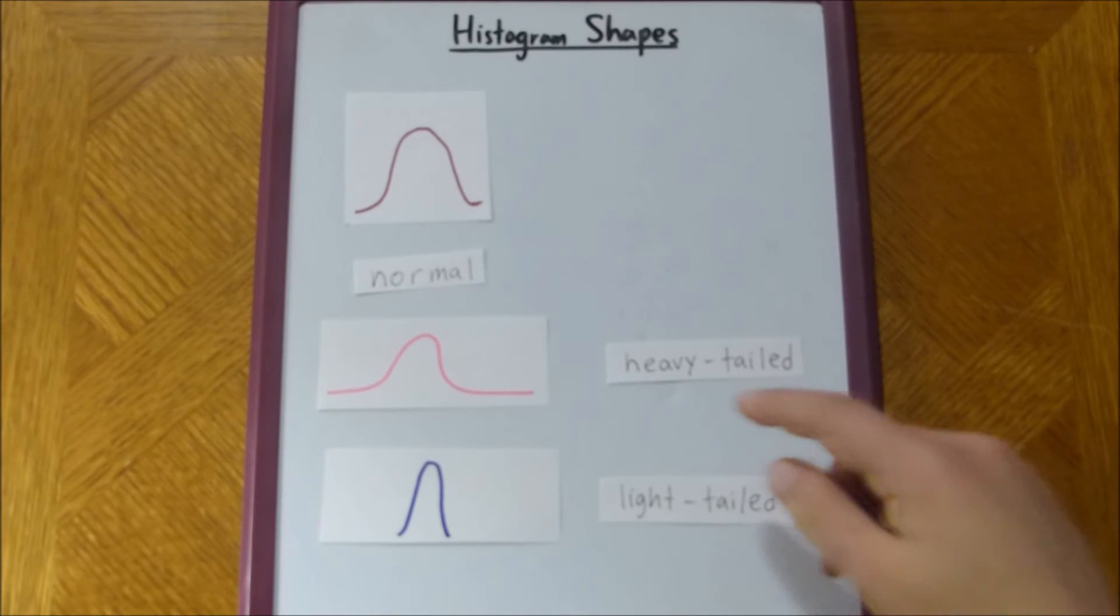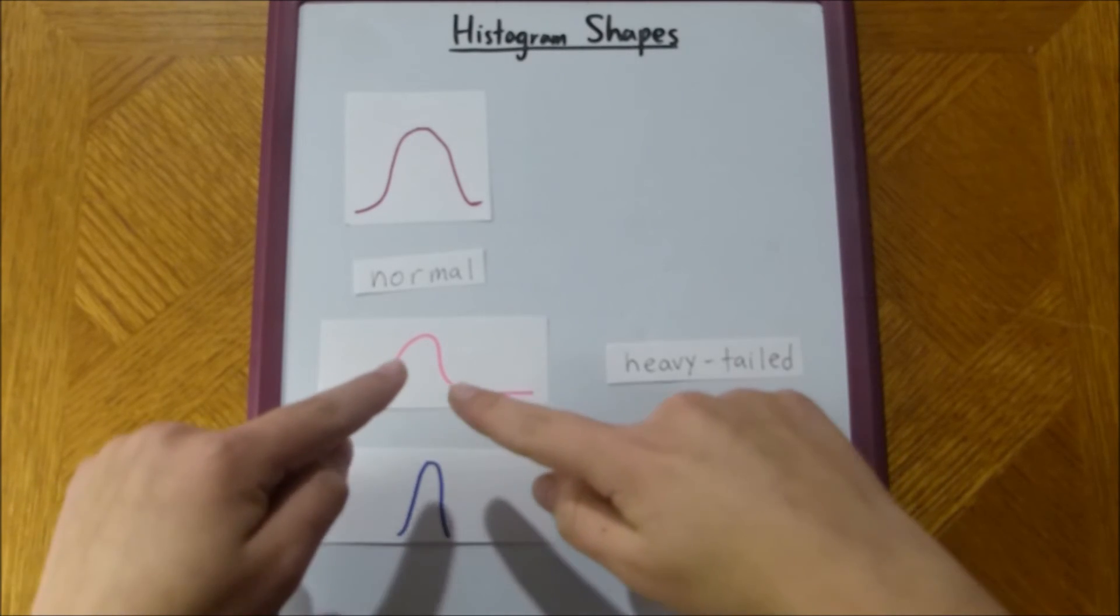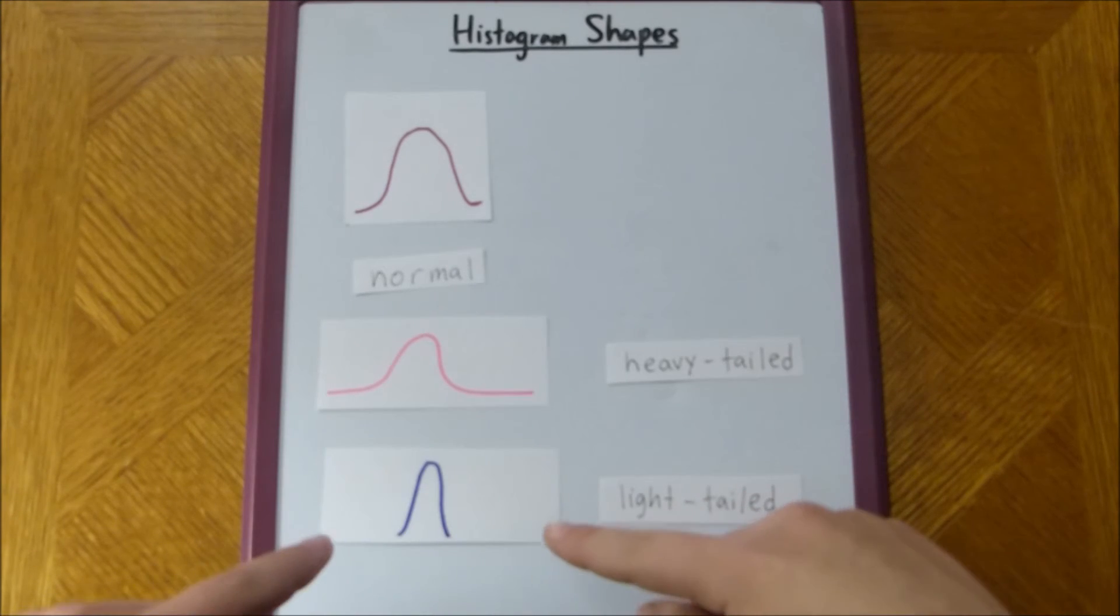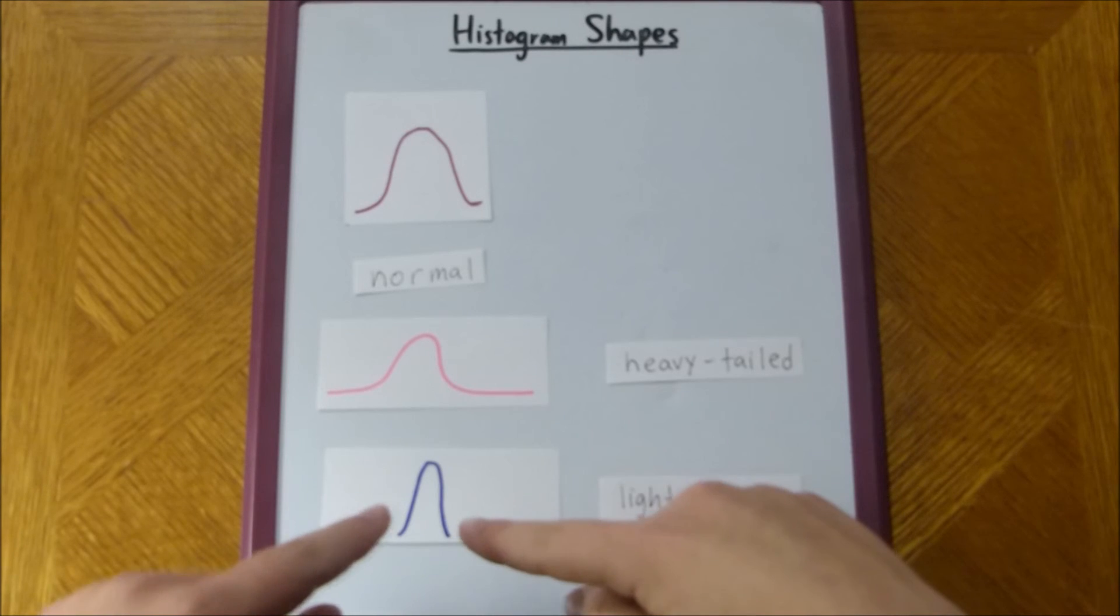Now, the reason we call this one heavy-tailed is because there's a lot more tail for this one than the normal graph. And, this one's called light-tailed because there's a lot less tail. There's like, you can barely even see the tails.